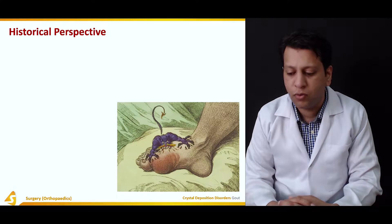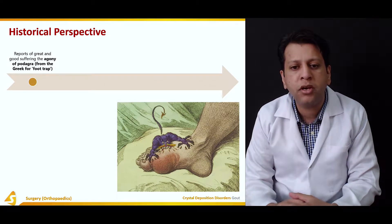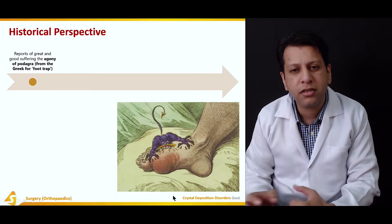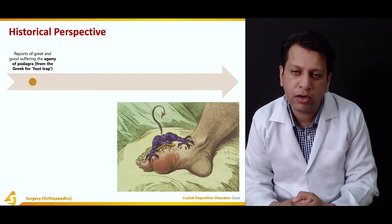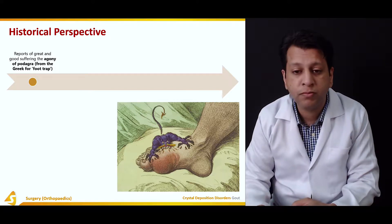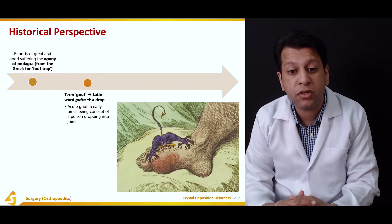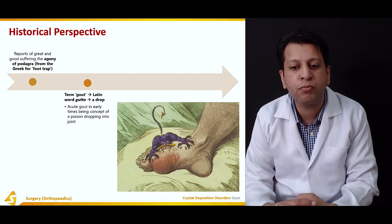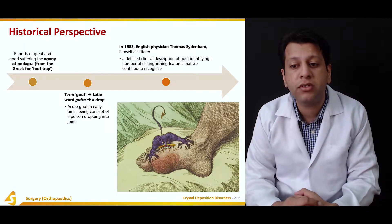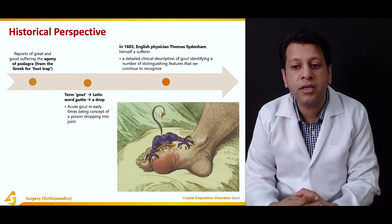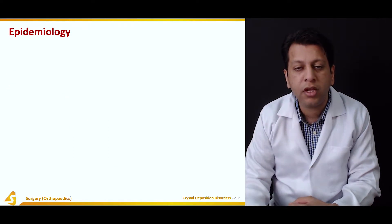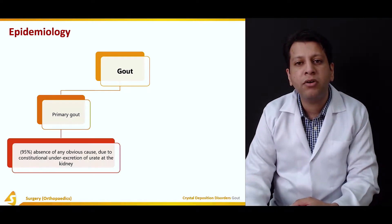Historical perspectives: reports of the great and good suffering the agony of podagra — from the Greek word meaning 'foot trap.' The classical features of gout included swelling of the first metatarsal joint, which was the most common involvement and presentation of gout, though not the only one. The term gout comes from the Latin word 'gutta,' meaning a drop — the early concept being of poison dropping onto the joint. In 1683, English physician Thomas Sydenham, himself a sufferer, described a detailed clinical description of gout identifying distinguishing features we continue to recognize.